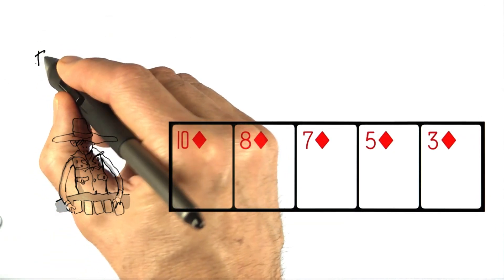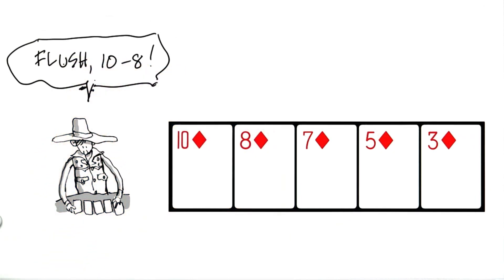Here's another hand. How do we declare this one? Our player has called flush 10-8, describing the two highest cards in his hand because that's usually enough to distinguish the hand from all other flushes that might be out there. In actuality, we might need all the hands to break the ties. A flush is rank number 5.